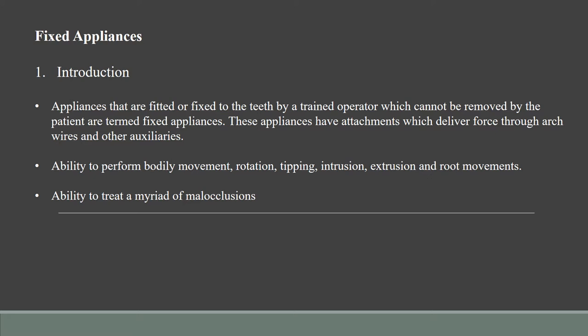Fixed appliances also have the ability to perform various tooth movements such as bodily movement, rotation, tipping, intrusion, extrusion and root movements. They also have the ability to treat a myriad of malocclusions such as class 1 with proclined upper and lower incisors, class 1 with crowded anteriors, class 2 both division 1 and 2. To a certain extent you can treat class 3 malocclusions as well. You can treat crossbites both anterior and posterior, and also open bite and deep bite.